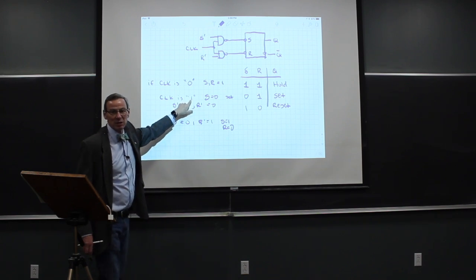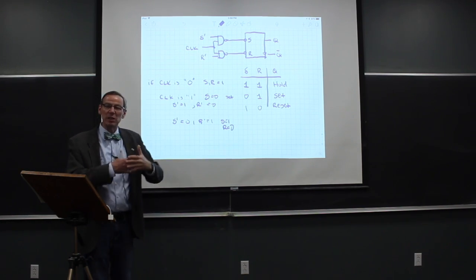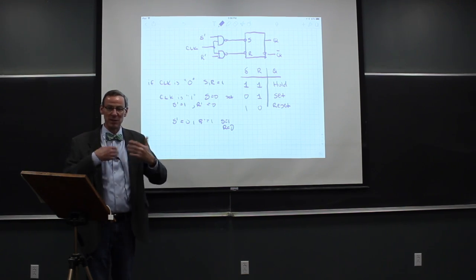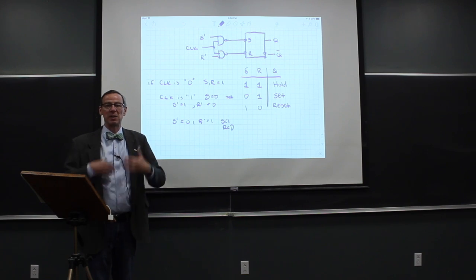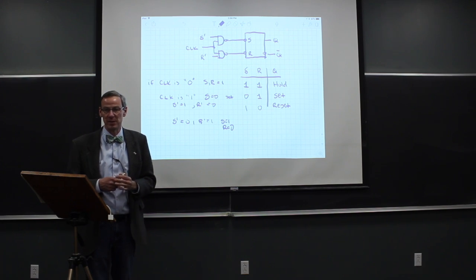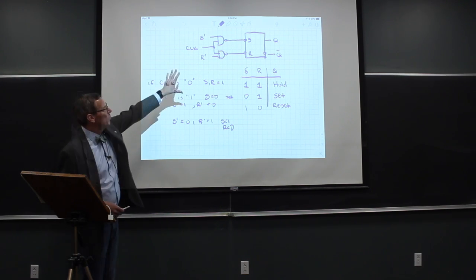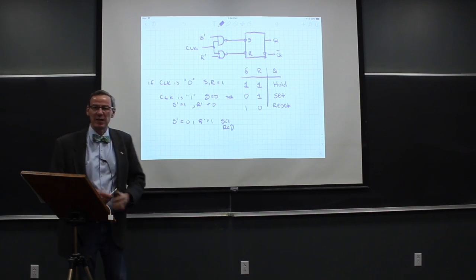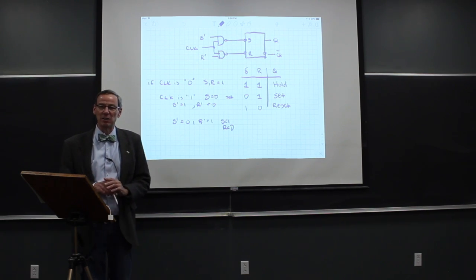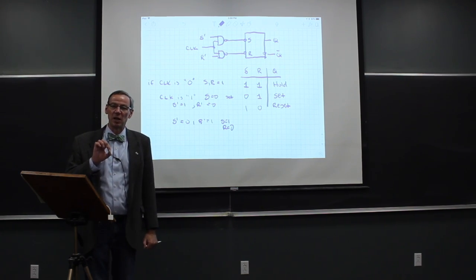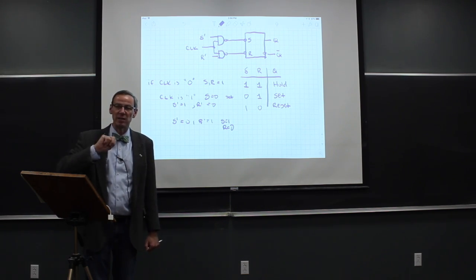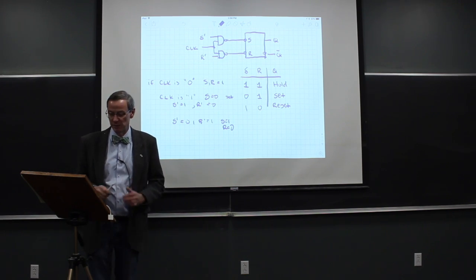This digital memory looks at its input when the clock is high and does nothing when it's low. The clock being high activates the flip-flop; it looks at its input and decides if it needs to change its state or just sit where it is. That's the so-called clocked flip-flop. With some more layers on this, we can do something called an edge-triggered flip-flop, where we're not just sensitive to the clock being high or low, but sensitive to the clock going from low to high or from high to low.